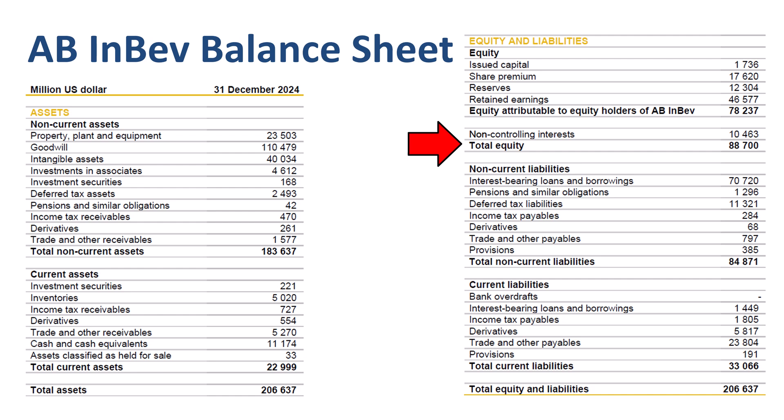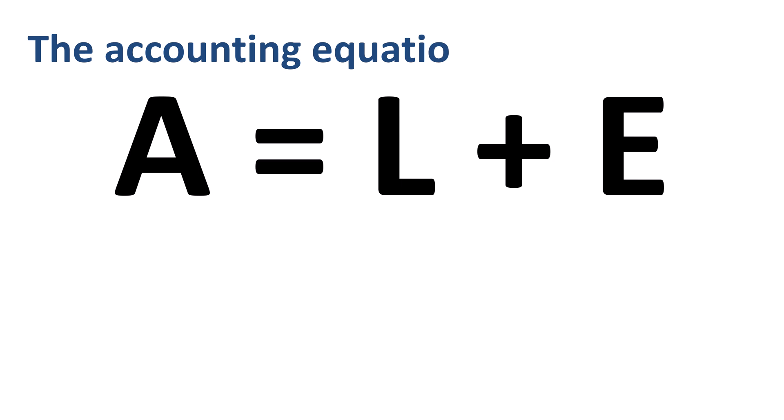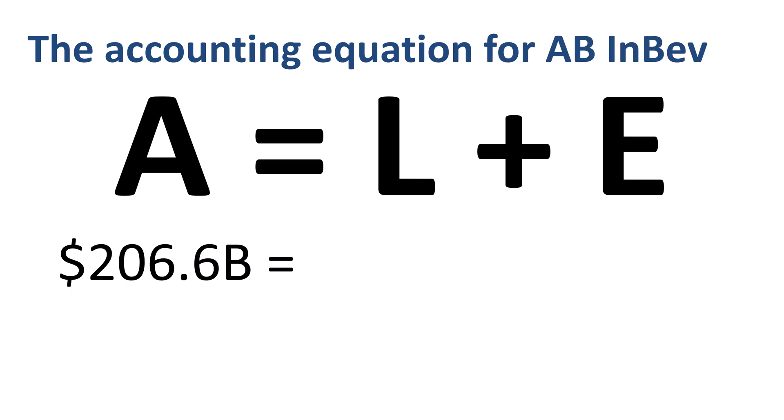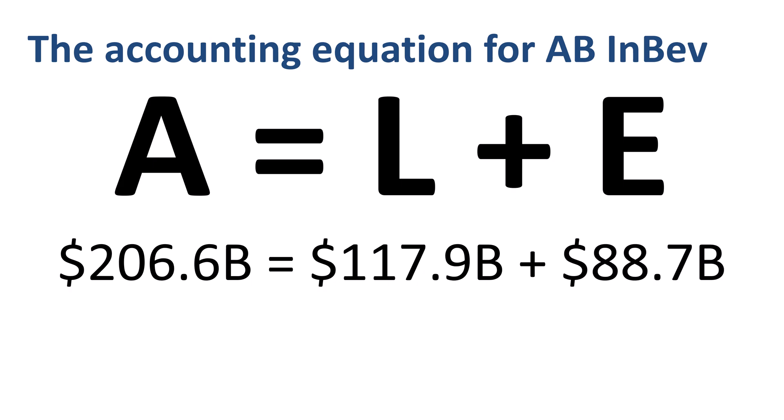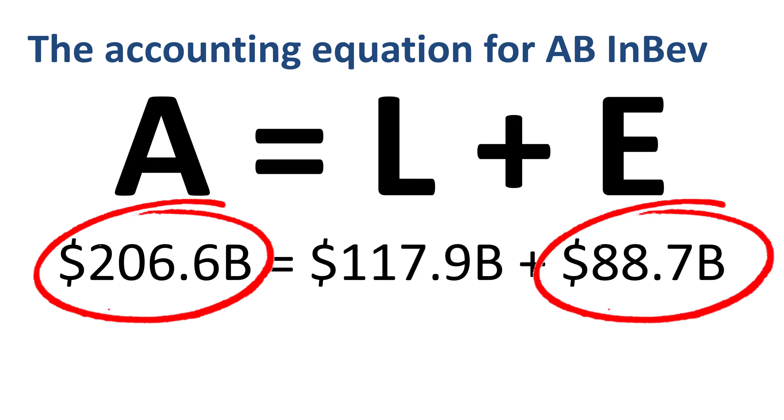We are ready to fill in the accounting equation for AB InBev: $206.6 billion equals $117.9 billion plus $88.7 billion. We collected the asset number and equity number directly from the balance sheet; the liabilities number we had to calculate.